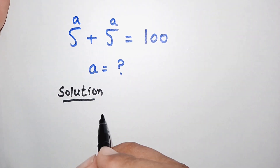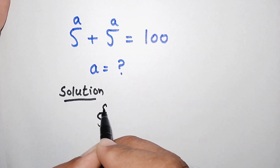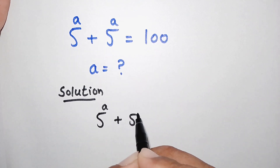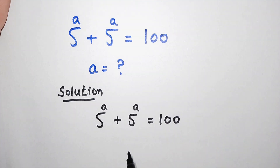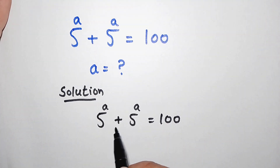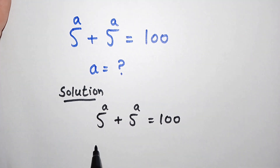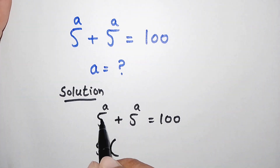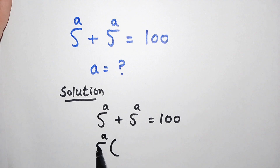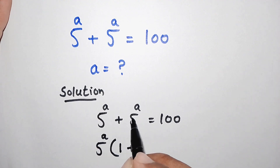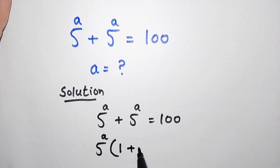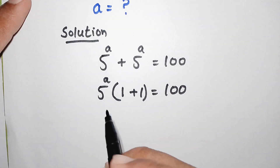Here the question is 5 to the power of a plus 5 to the power of a is equal to 100. To solve this, we have to take 5 to the power of a as a common factor. So: 5 to the power of a times (5 to the power of a divided by 5 to the power of a plus 1), which gives 1 plus 1.